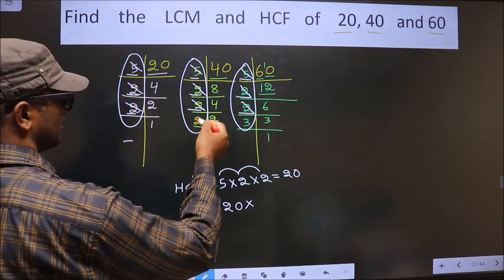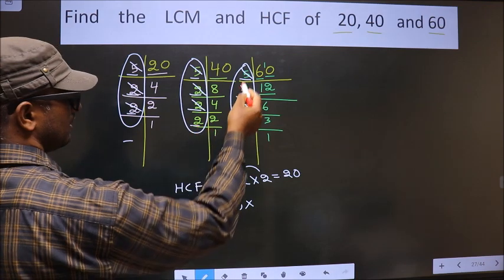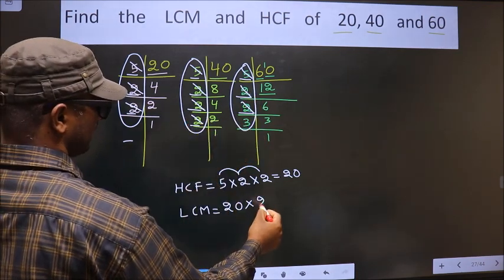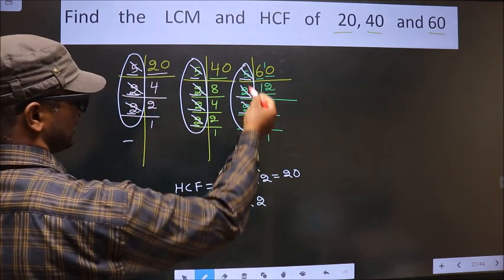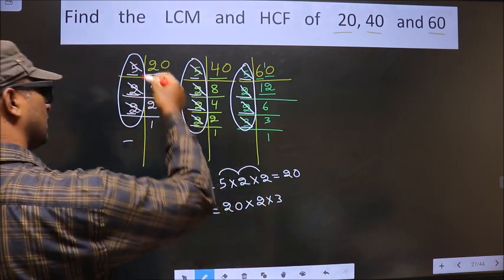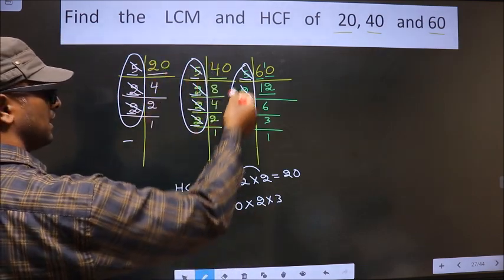Here each number is cut. Here 2 is not cut. Do we have 2 here? No. So you cut 2 right here. Now here 3 is not cut. So you cut 3 right here. Now you see each number has been cut.